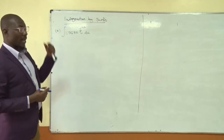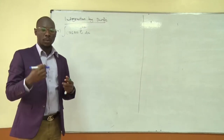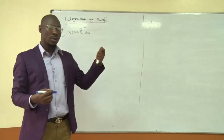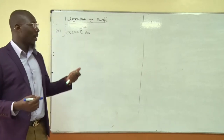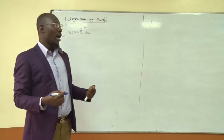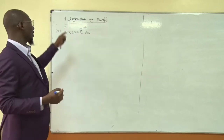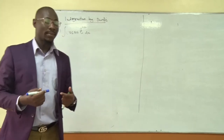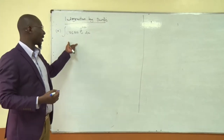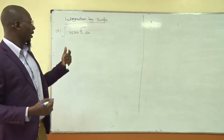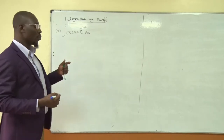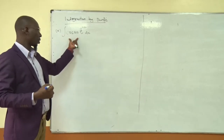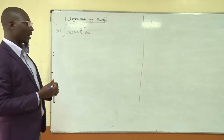Let's look at integration by parts. Given a product of two functions to integrate, you can use the method we discussed previously, that is algebraic substitution. Another method you can use is integration by parts. I'll just solve an example directly. In this method, you use derivatives and antiderivatives of the partial products of functions to get the integral.